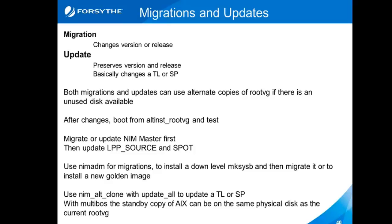And then there's something called MultiBOSS. With alternate disk install I have two disks — the one I'm running on and the disk that I'm actually putting the new copy on. With MultiBOSS, what I can do is have that second copy of AIX on the same physical disk. I personally prefer to use alternate disk install and use a second LUN — I'm always nervous that I'll hit the wrong copy of AIX otherwise.